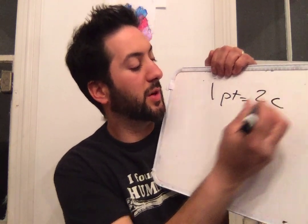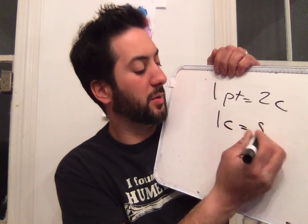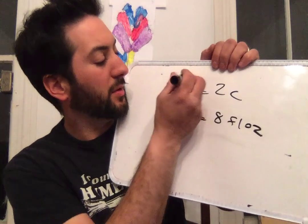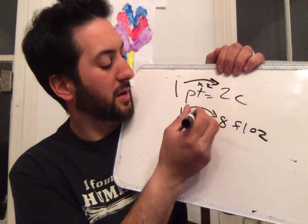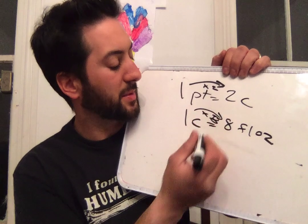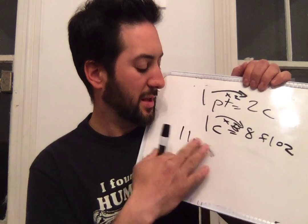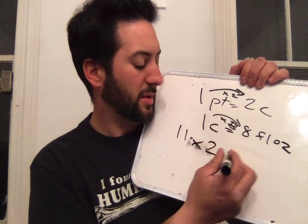Number eight: 11 pints to fluid ounces. This is a double conversion. One pint equals two cups, and one cup equals eight fluid ounces. So you take 11 and multiply by 2 and then by 8. 11 times 2 is 22, and 22 times 8 is 176 fluid ounces.